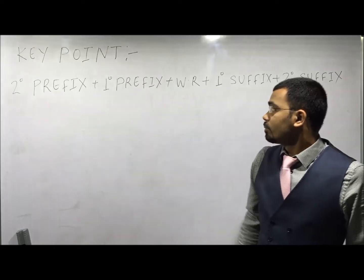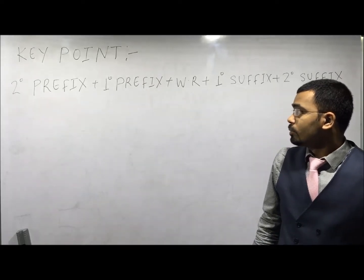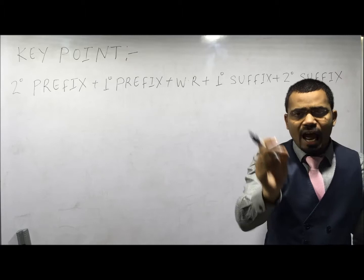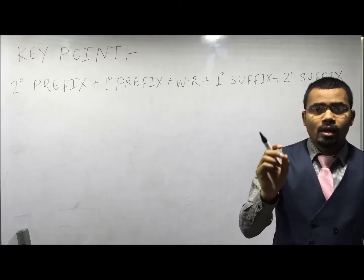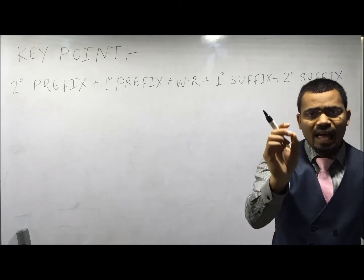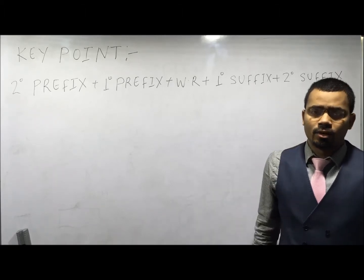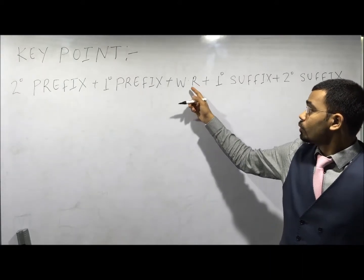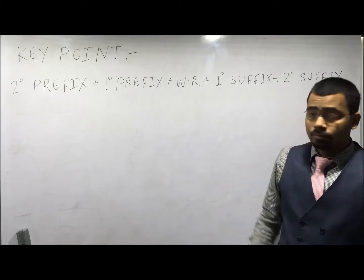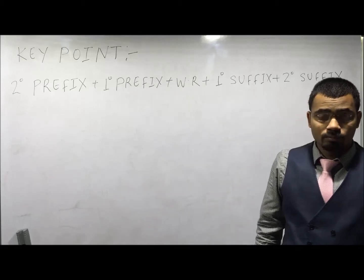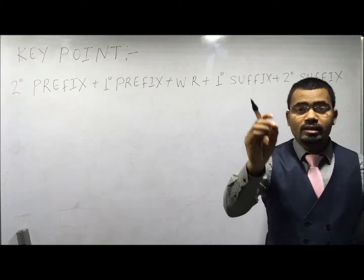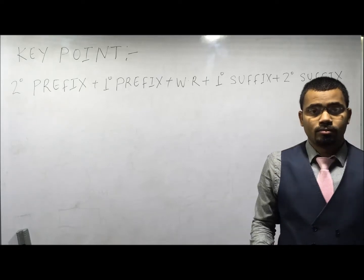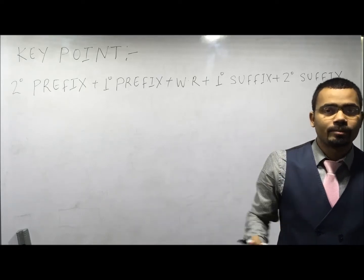Primary prefix describes the cyclic or alicyclic nature of the given chain. The word root is the name of the carbon skeleton in the parent chain.